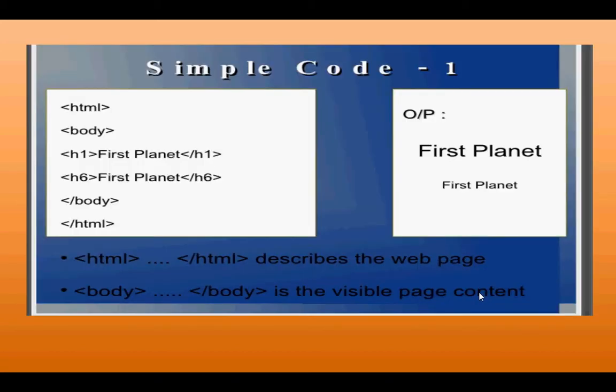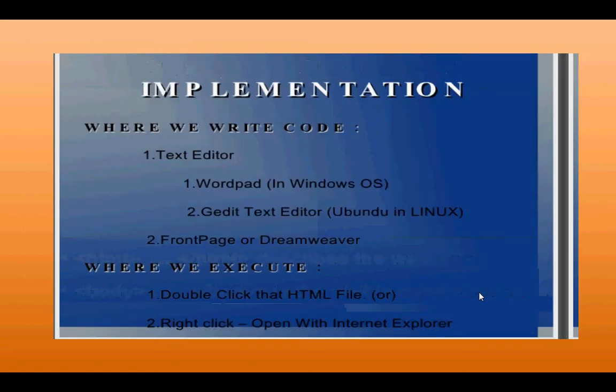First of all, we did the structure of an HTML document. The structure is somewhat like this: HTML, head, title, body. Then, how do we implement the code? First, we write the code in a text editor. After writing the code in the text editor, we can view it in the browser — Internet Explorer, Mozilla, or Firefox.